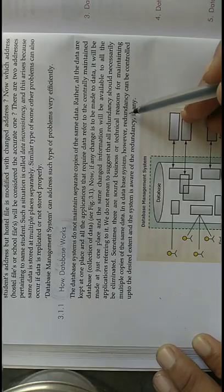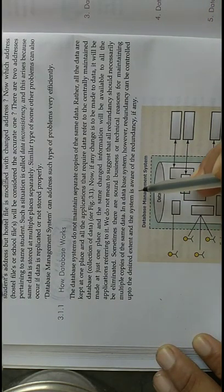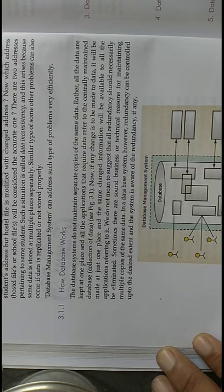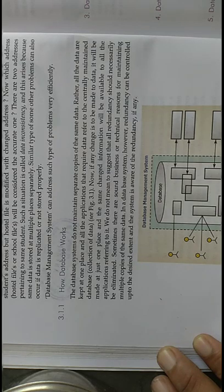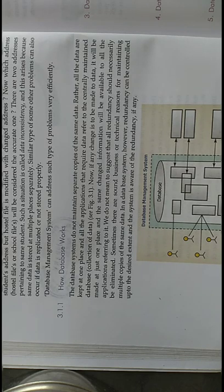We do not mean to suggest that all redundancy should necessarily be eliminated. Sometimes there are business or technical reasons for maintaining multiple copies of the same data. However, redundancy can be controlled to a desirable extent, and the system is aware of the redundancy if any. The database management system maintains a central file system — if any changes are done, those changes will be done in the central file system, and all applications using that central file system will also get those changes.